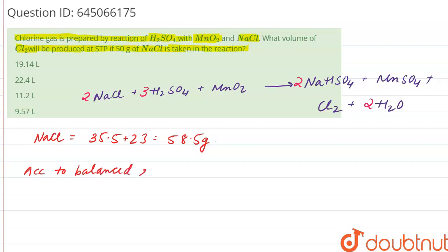According to balanced reaction, 2 into 58.5 gram, that is 117 gram of NaCl, produces 1 mole of Cl2, that is 22.4 liter of Cl2 at STP.